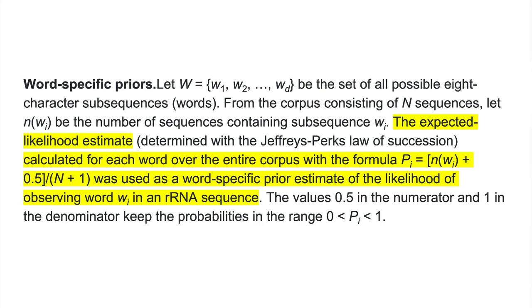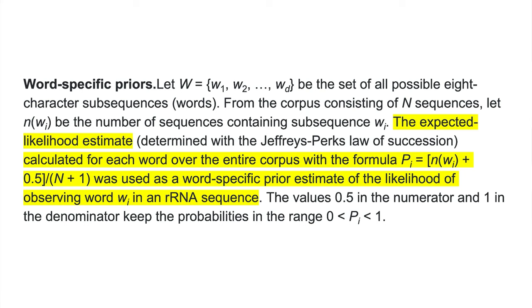That will allow us to calculate the word-specific priors and the genus-specific conditional probabilities. The word-specific priors were described in the methods section of the paper. The expected likelihood estimate for determining the Jeffrey-Perks Law of Succession is determined by the formula: pi equals nwi plus 0.5 divided by big N plus one. Basically what this means is that if we take all of the sequences in our dataset, we can count how many sequences have each k-mer. That wi we can think of as being all possible eight-character subsequences — those words — and nwi is the number of sequences that have that. We're only counting occurrence one time per sequence.